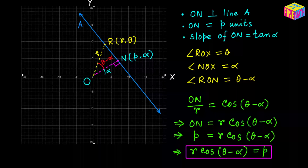This equation is expressed in terms of alpha and p, which are the given information. p is the distance of the straight line from the origin, alpha is the angle that ON makes with the positive direction of the x-axis, and lowercase r and theta are the polar coordinates of the moving or variable point on the straight line.